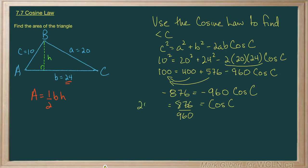876 divided by 960 is 24.15. No, no, no, that's not right. That's my answer. Sorry, I kind of gave it away there. 0.9125.